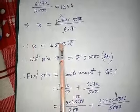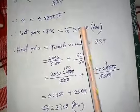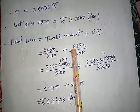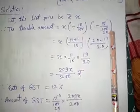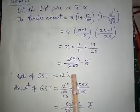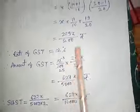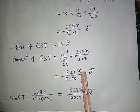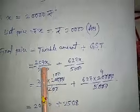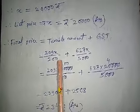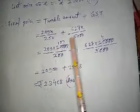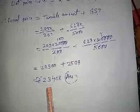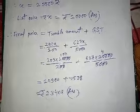After solving, we get list price X = Rs. 20,000. Now final price = taxable amount + GST. The taxable amount is 209X/200 and GST is 12/100 of that. Putting the value X = 20,000 into both expressions and adding them, we get a final price of Rs. 23,408.